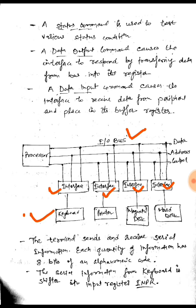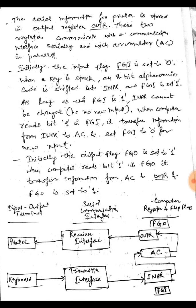The terminal sends and receives serial information; each quantity of information has 8 bits of an alphanumeric code. The serial information from the keyboard is shifted into the input register INPR, and the serial information for the printer is stored in output register OUTR. These two registers communicate with the communication interface serially and with the accumulator in parallel.